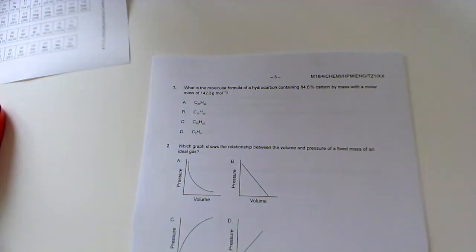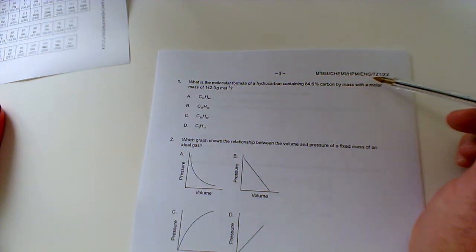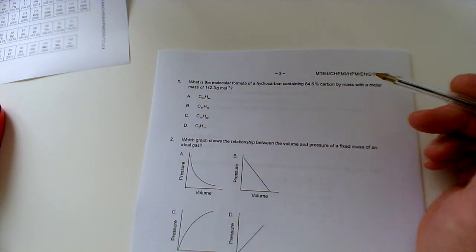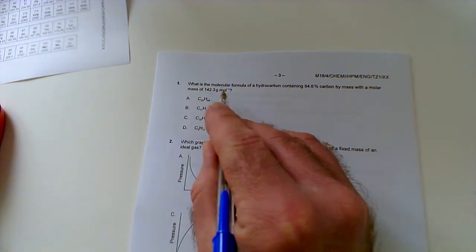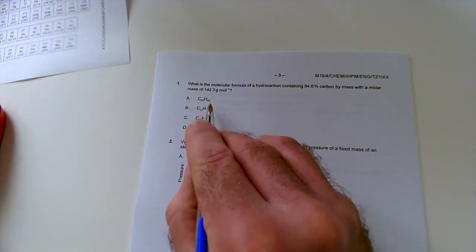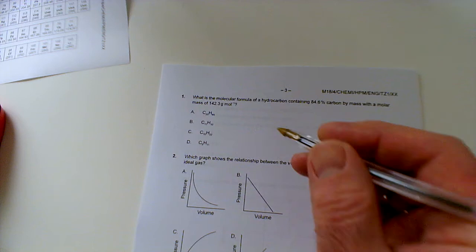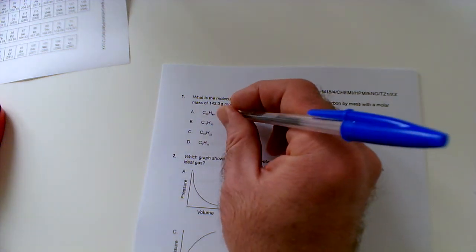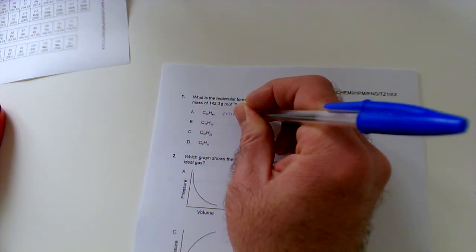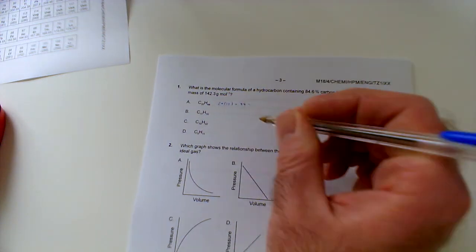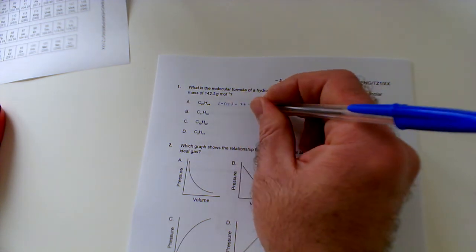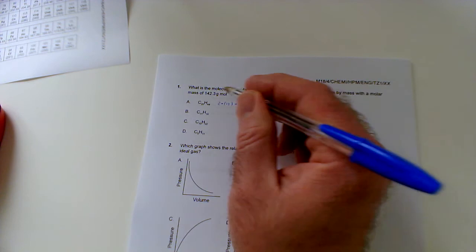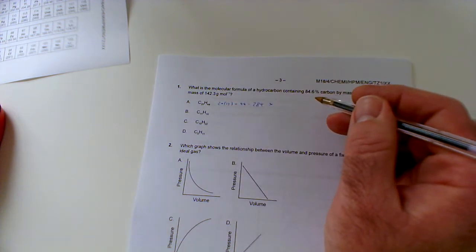What is the molecular formula of a hydrocarbon containing 84.6% carbon by mass with a molar mass of 142.3? Of course, we don't have a calculator in this exam. Let's take the information a bit at a time. First, let's work out the molar mass of these substances to see which ones match. The first one is C20, so that's 20 times 12 plus 44. Well, 10 twelves are 120, so double that is 240 plus 44, that's 284. That's far too heavy, it can't be that one—it's basically double the mass.